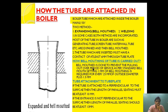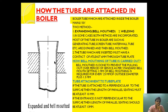Bell mouthing is done so that the tube doesn't get pulled out while it is in service. As per standard, 1 mm of bell mouth is required for every 25 mm of outside diameter plus 1.5 mm. So if the diameter is 25 mm, then the bell mouthing will be 1 + 1.5 mm of the diameter.